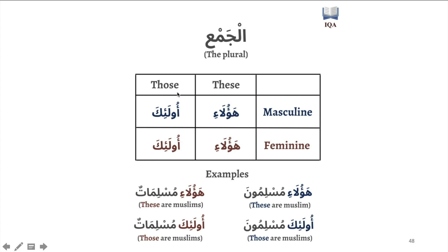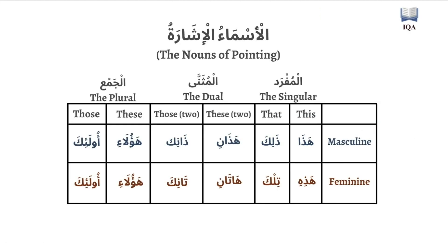Both are translated as 'these' or 'those.' So to wrap up the asma' al-ishara, this table should break it down for us. The singular masculine 'this' is hadha, and 'that' is dhalika. Feminine: hadhihi, tilka. The muthanna dual form: hadhaani and hadhaani for 'these two,' masculine and feminine. Those two, masculine: dhanikaani. Feminine: tanikaani. And then the jama', the plural — there's no differentiating between masculine and feminine. Both use ha'ulai for 'these' and ula'ika for 'those.'